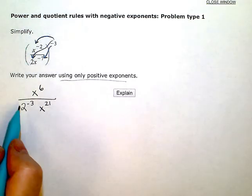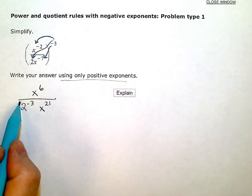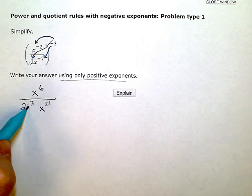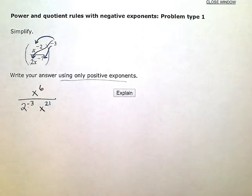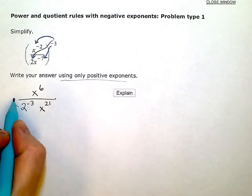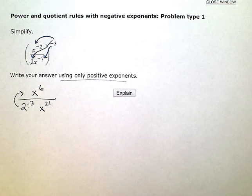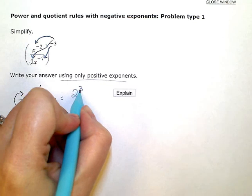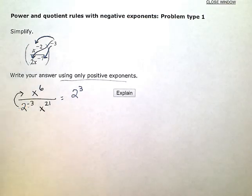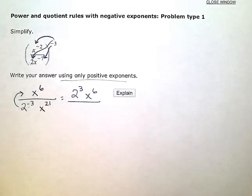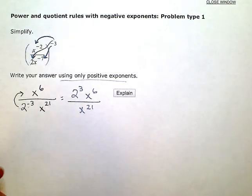So I'm just going to deal with this one now: 2 to the negative 3. A negative exponent means that I need to do the reciprocal — this 2 is not happy down in the denominator; it wants to move upstairs to the numerator. When I move the 2 upstairs, I can change this exponent to positive. I still have x to the 6th in the numerator, and now I have x to the 21st in the denominator.